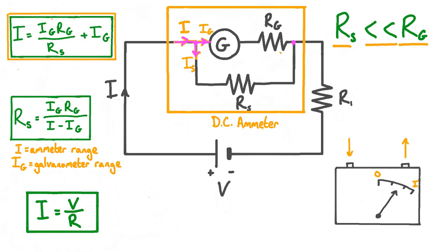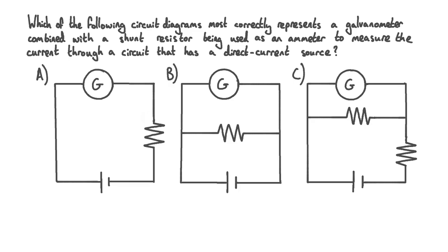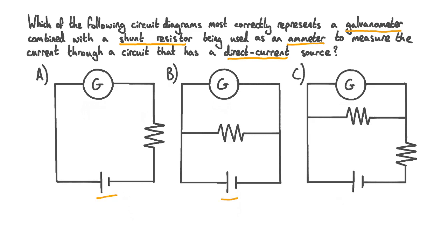Now that we've looked at the principles behind ammeter design, let's have a go at answering a question. Which of the following circuit diagrams most correctly represents a galvanometer combined with a shunt resistor being used as an ammeter to measure the current through a circuit with a direct current source? We've been given three different circuit diagrams to choose between, and each one contains a galvanometer represented by a G inside a circle. Each circuit also contains a cell, which is a type of direct current source, and each contains either one or two resistors connected in various ways.